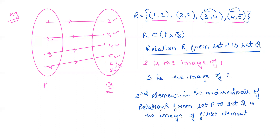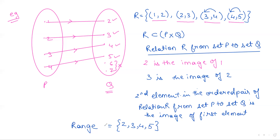From this example, we have understood that there are four images. Now, if you form a set of these four images — {2, 3, 4, 5} — then this set is called the range. It has a specific name: range. This range is specific to this relation R, so it is also called the range of relation R.